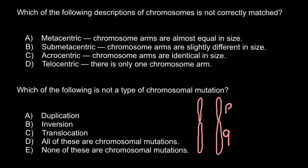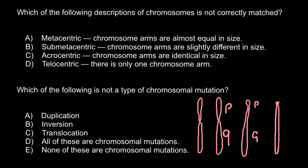Acrocentric is listed as 'chromosome arms are identical in size,' but that was answer A — metacentric. Actually, acrocentric is when two arms are unequal in size, even more so than in the submetacentric variant. In acrocentric, one arm is very small and the Q arm — the long arm — is very long. Telocentric would be the last example, a chromosome with only one arm where the centromere is positioned at the top.